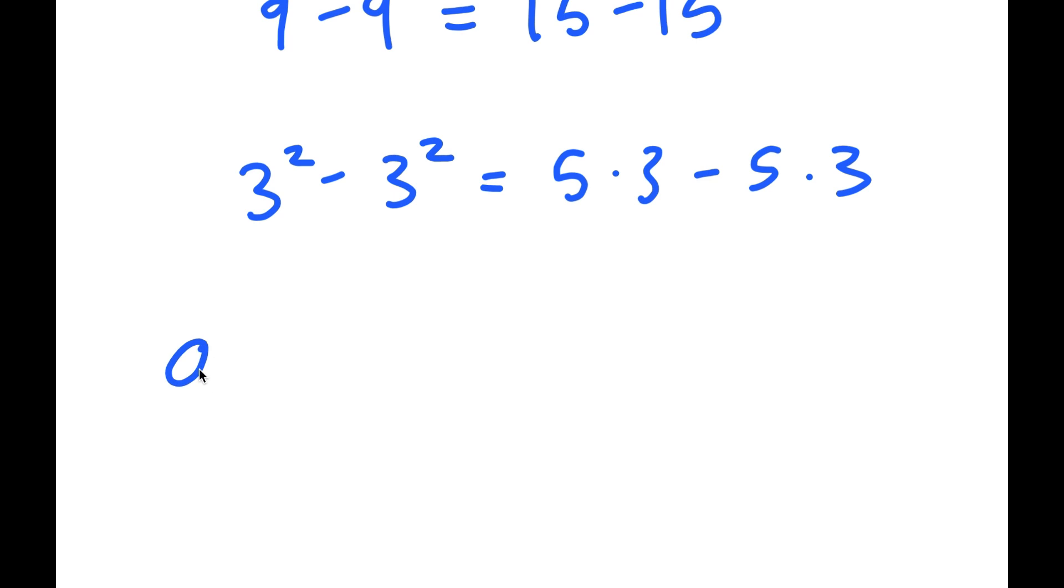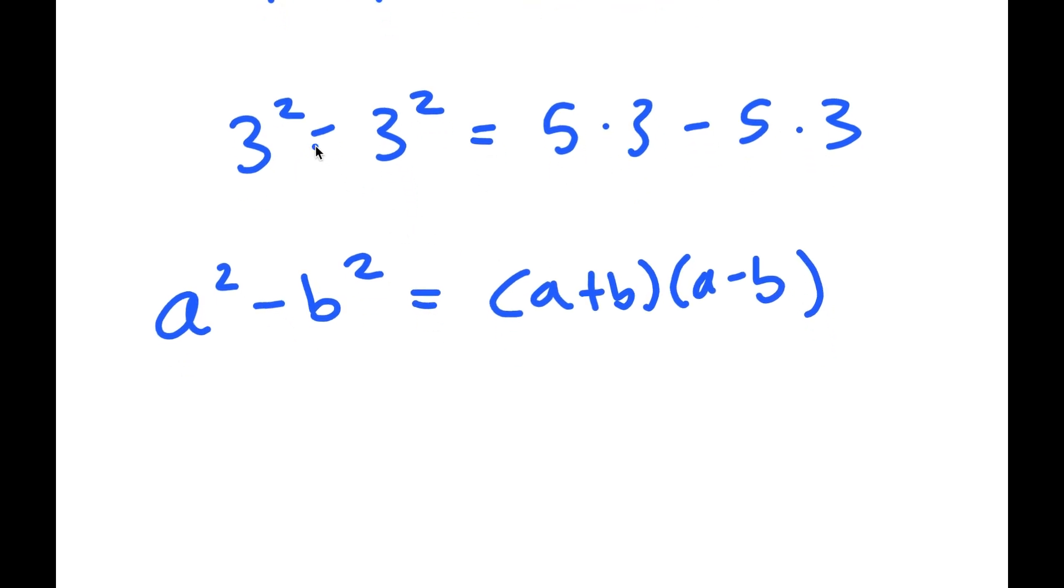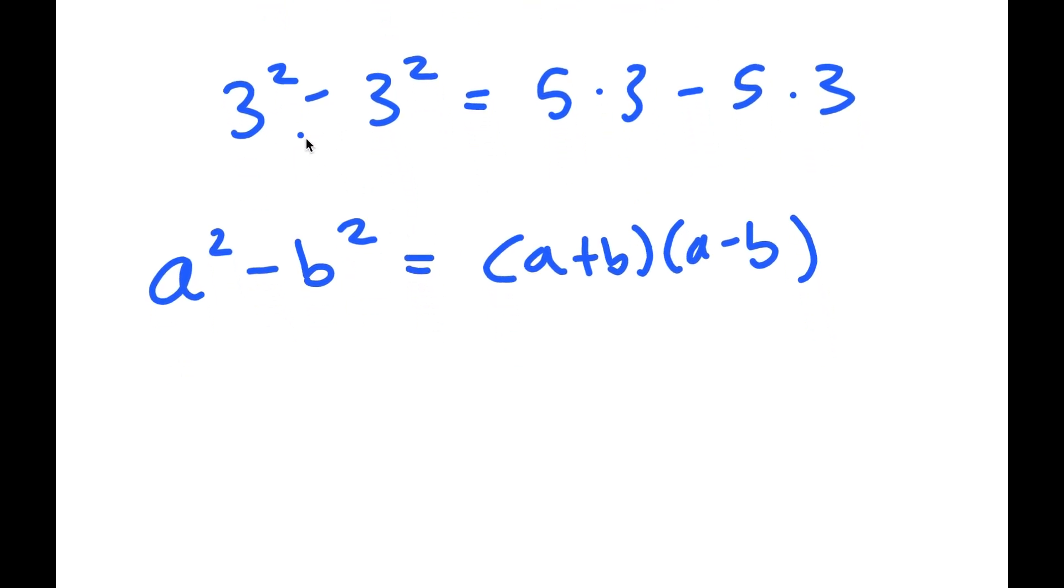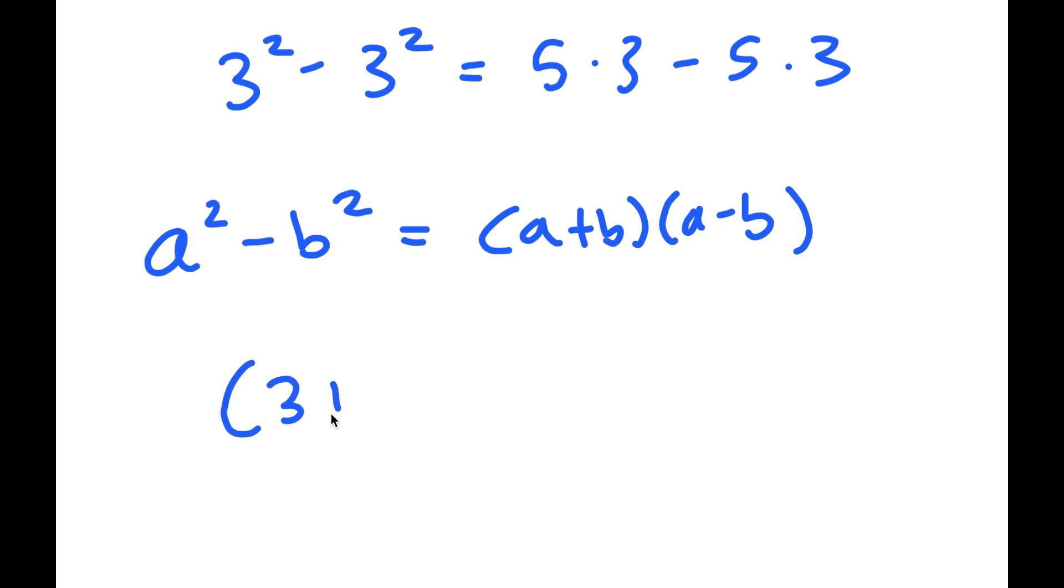Now, I'm going to be using the property a squared minus b squared is equal to a plus b times a minus b. So 3 squared minus 3 squared turns into 3 plus 3 times 3 minus 3.